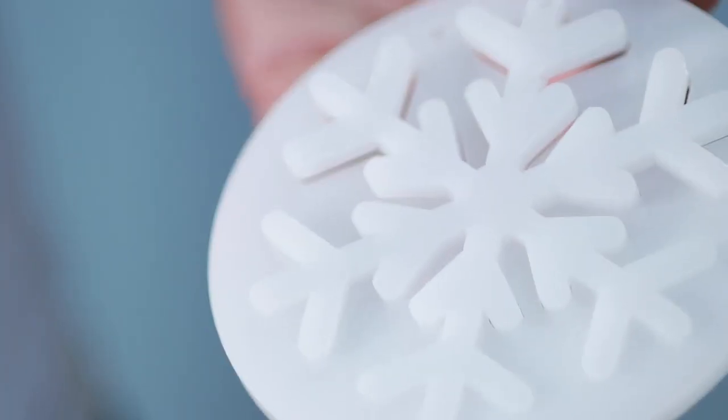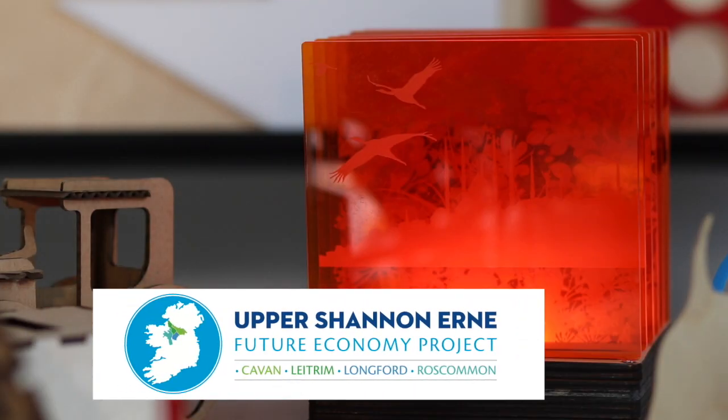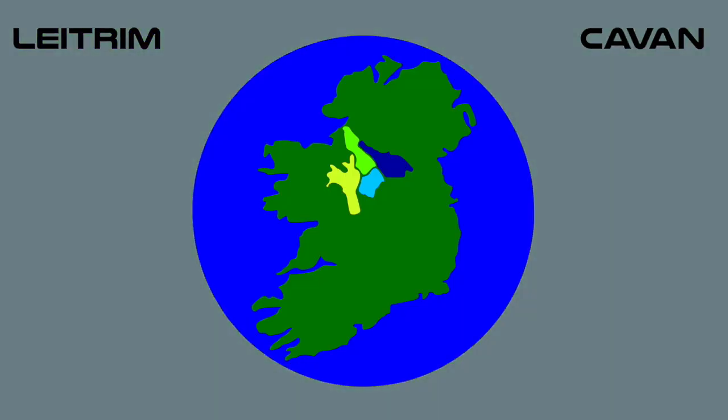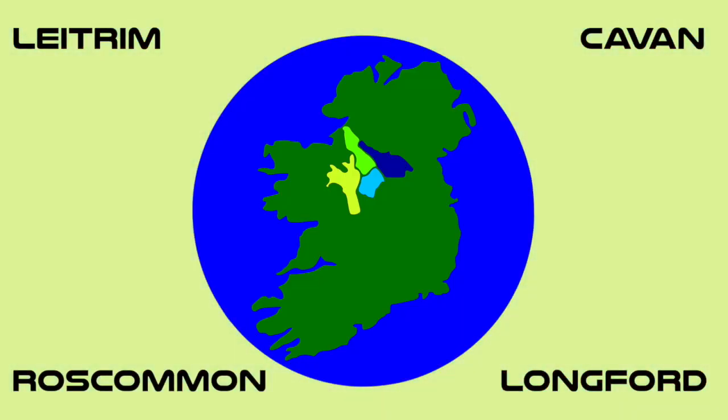FabLab Maker Hub is a mobile FabLab funded by the Upper Shannon and Aaron Future Economies project. It covers the geographical area of Counties Leitrim, Cavan, Longford and Roscommon.